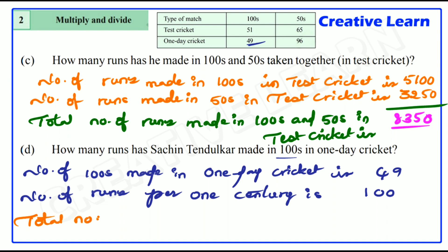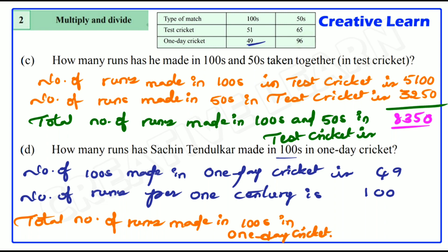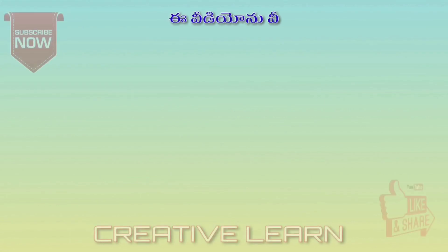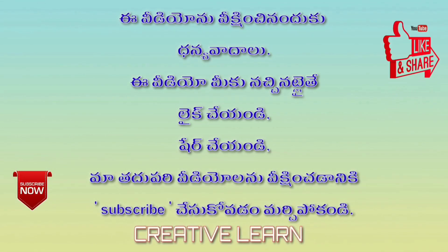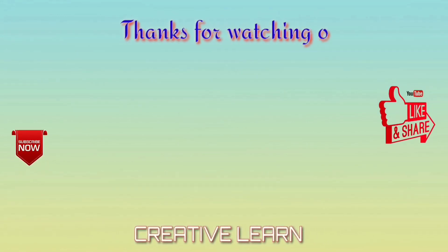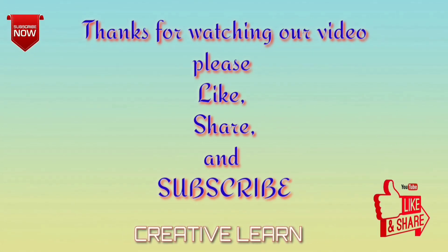Total number of runs made in centuries in one-day cricket is 49 into 100, that is 4,900 runs. 4,900 runs made by Sachin in centuries in one-day cricket.